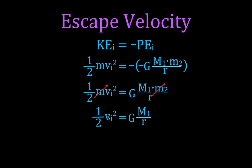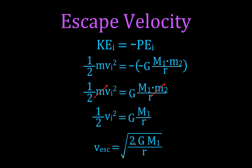Now I'm going to solve for this — I'm going to do two things: multiply both sides by two to get rid of the one-half, and then take the square root to get rid of the square. I get that the initial velocity, which is really the escape velocity, is equal to the square root of two times G, the gravitational constant, times m1, the mass of the central object, divided by r, which is the distance between those two objects. For Earth, G is 6.67 times 10 to the minus 11, the mass of the Earth is 5.98 times 10 to the 24th, and r is the radius of the Earth.